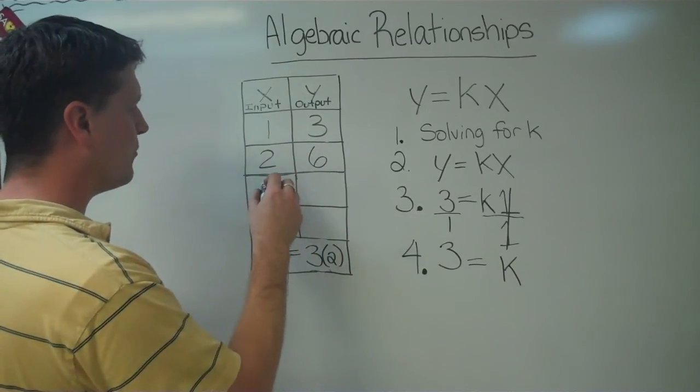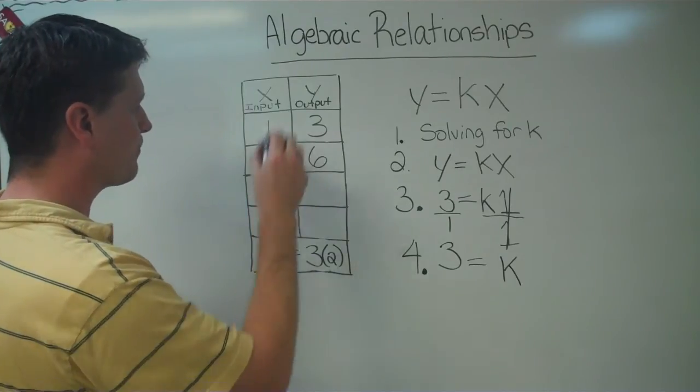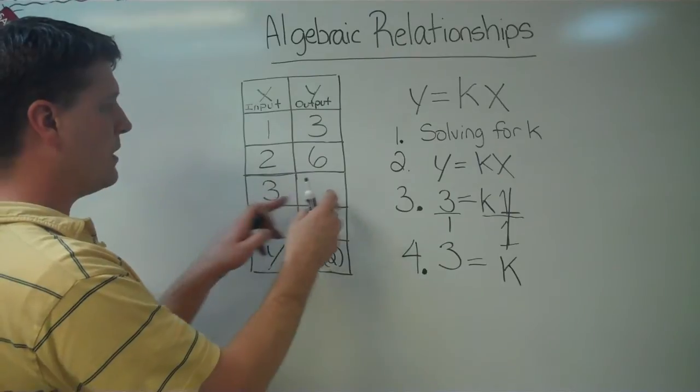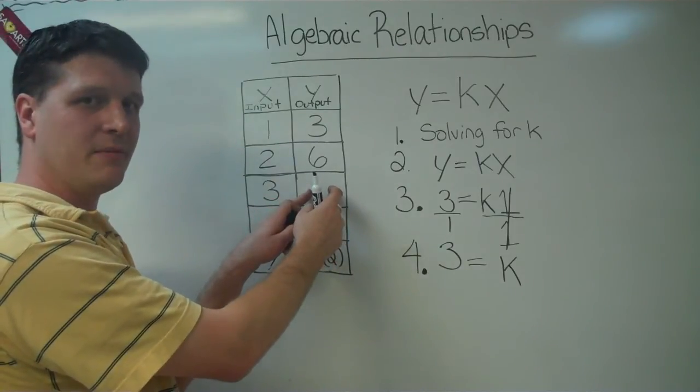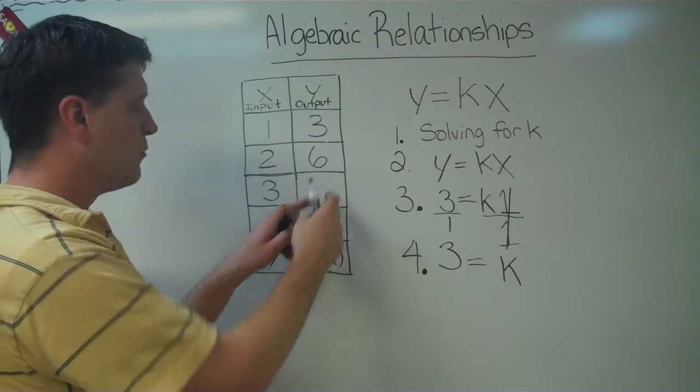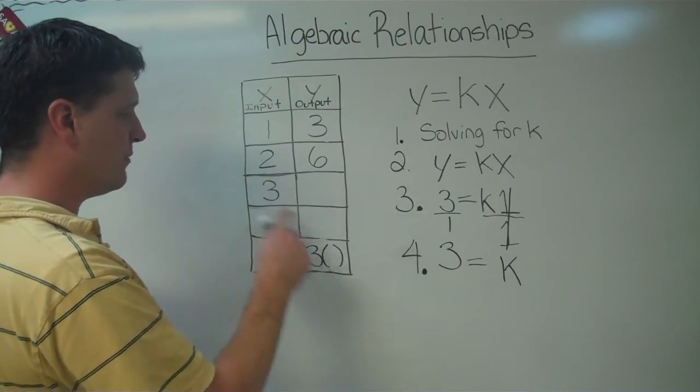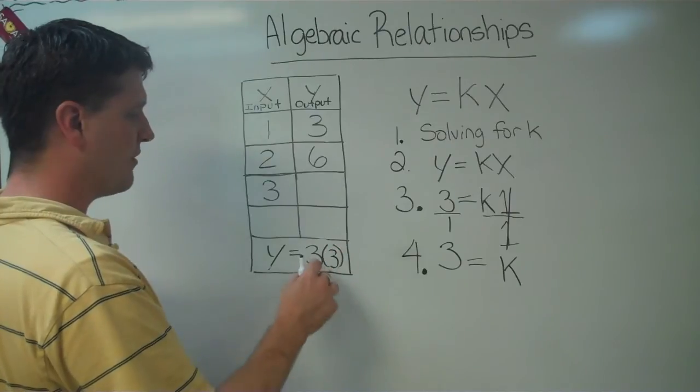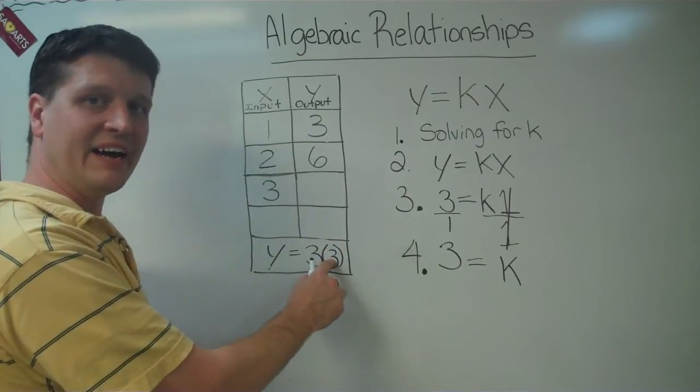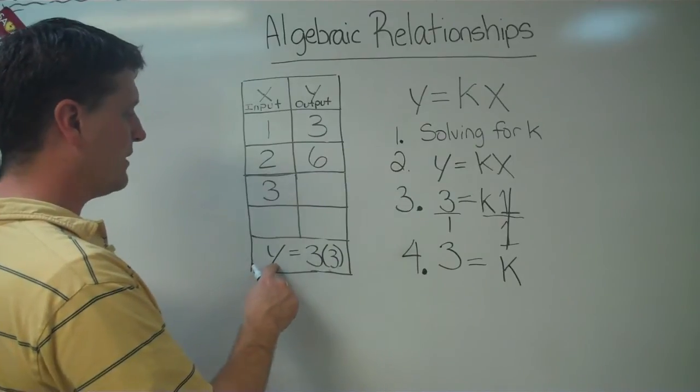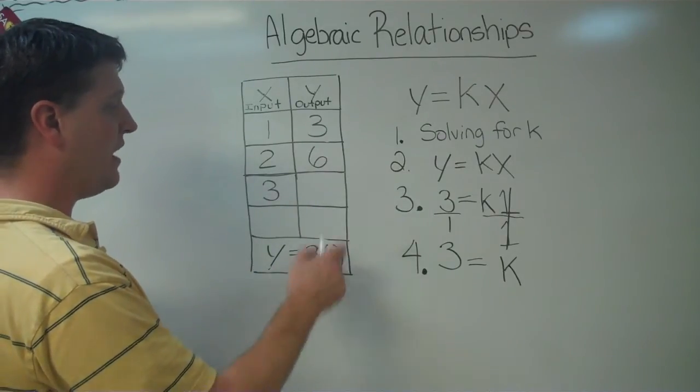Let's go ahead and try 3. Let's just say we want to put a 3 in here, but we don't know what our y value is going to be. That's our output. Let's go ahead and instead of putting an x here, we'll replace it with a 3. 3 times 3 gives me 9, and so y, or my output, is going to be 9.